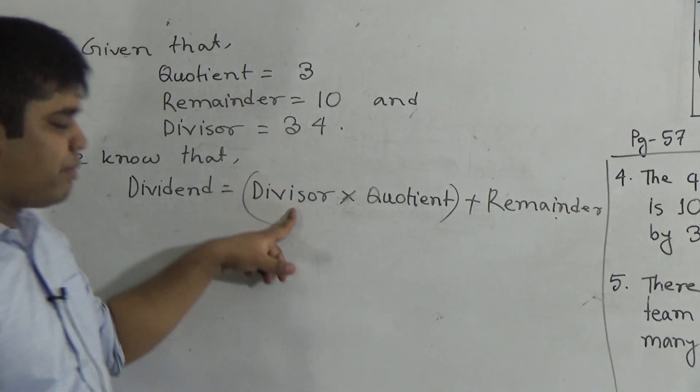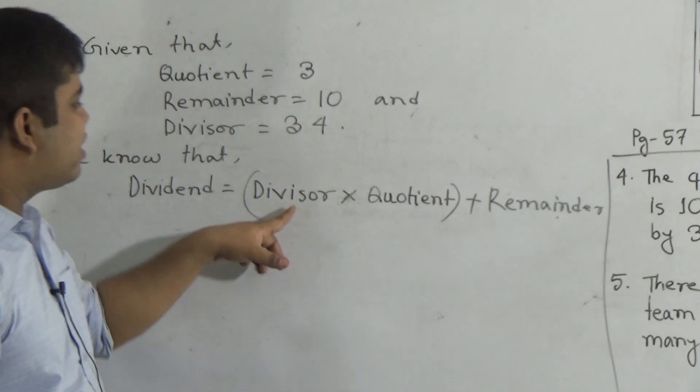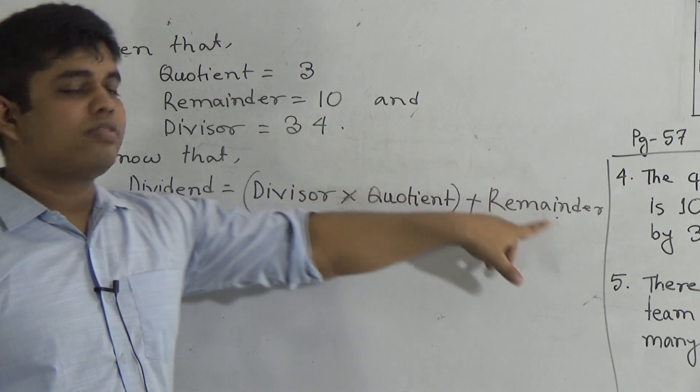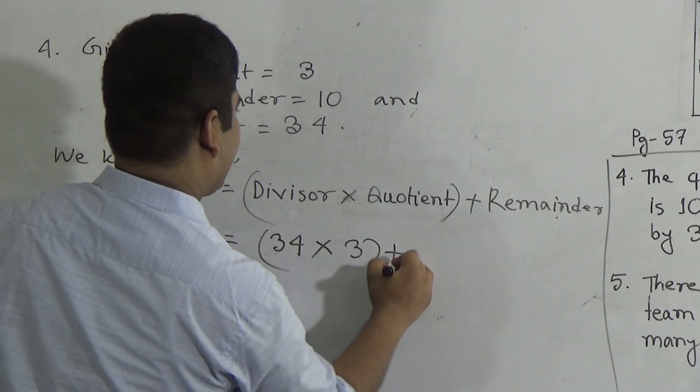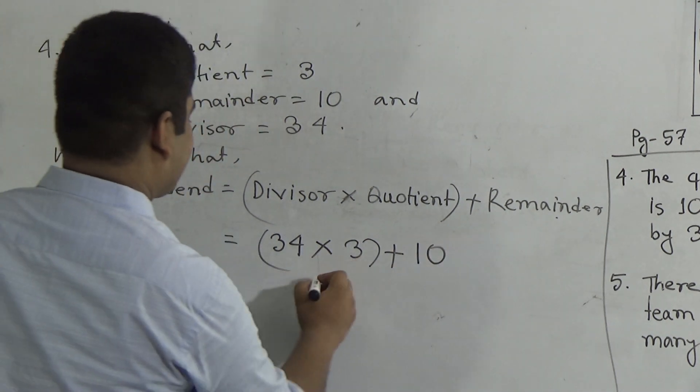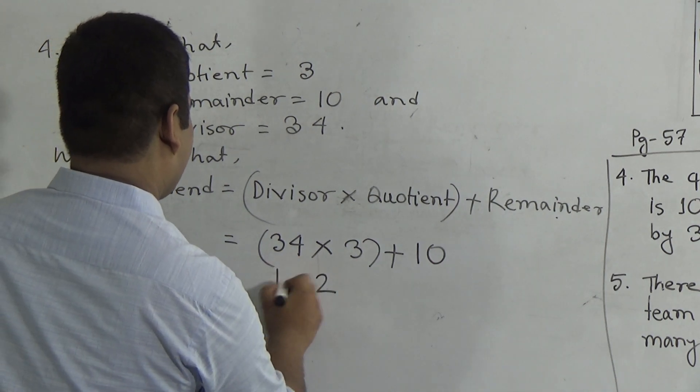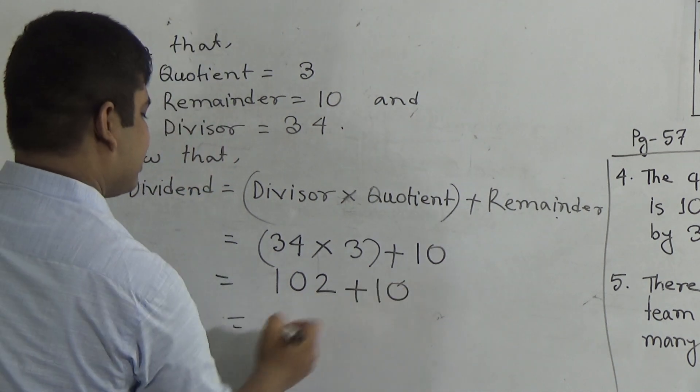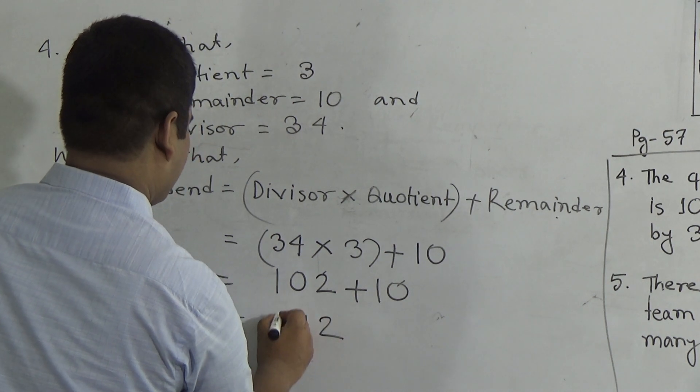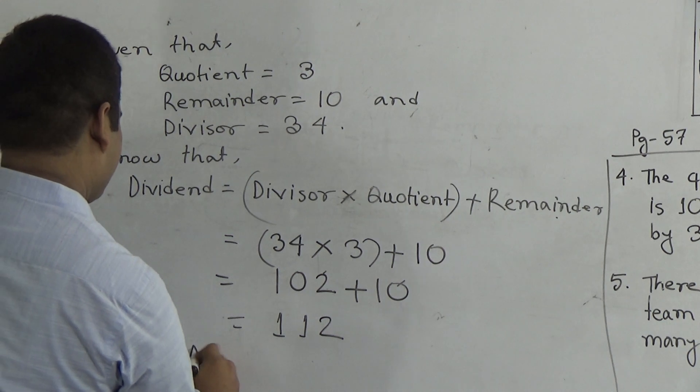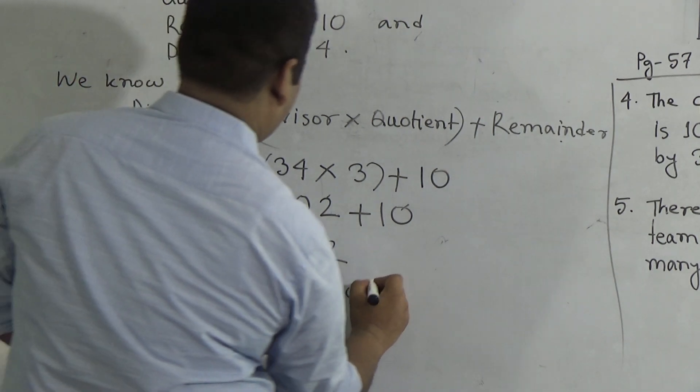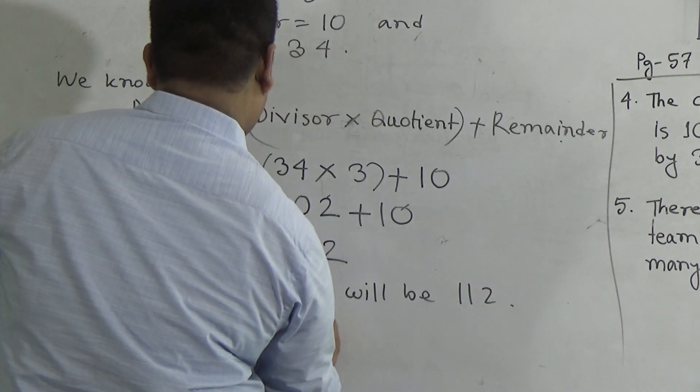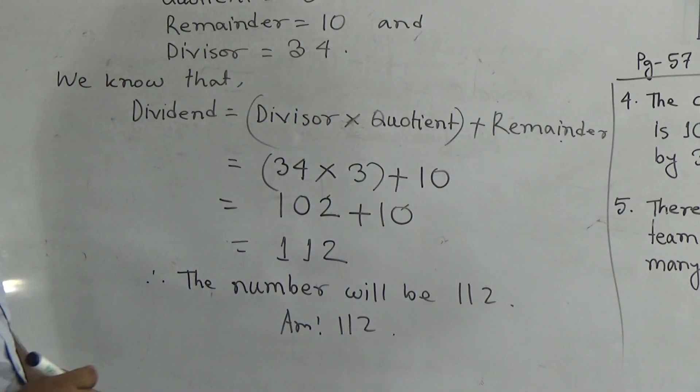Now you notice the value of divisor, quotient and remainder is given. Divisor is 34, quotient is 3, and remainder is 10. Now we put the value: 34 multiply by 3 plus 10 equals 102 plus 10 equals 112. Now what will be the number? The number will be 112. Answer: 112. I hope you have understood how to find out dividend by using quotient, remainder and divisor. This is very important math.